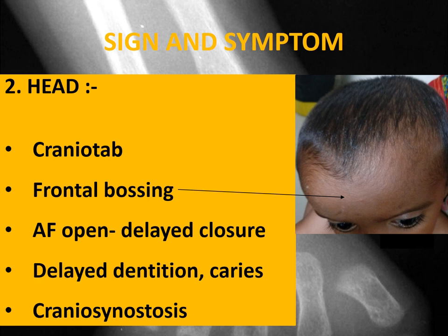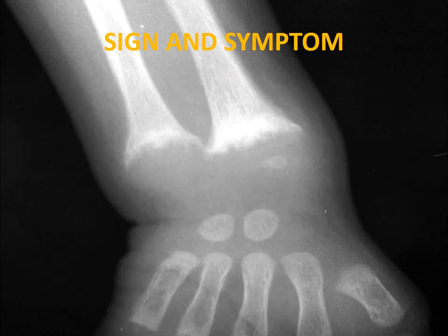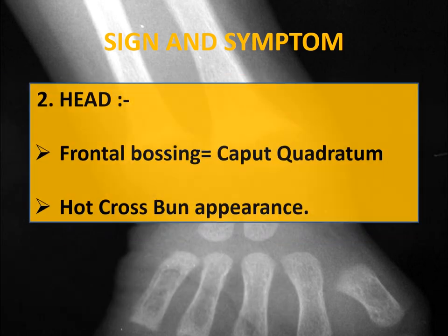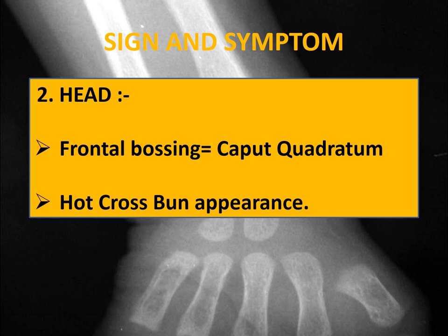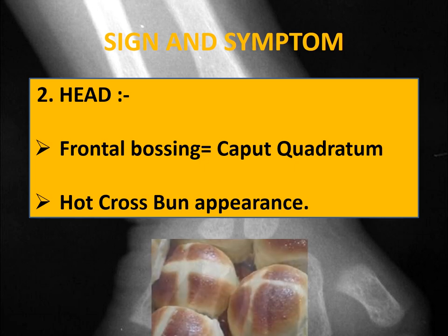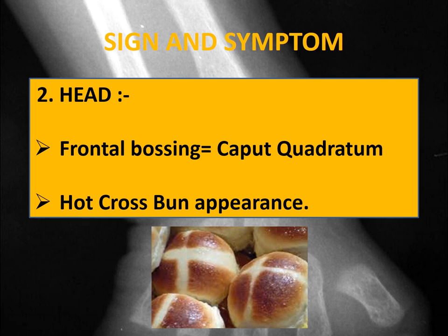Rarely, craniosynostosis can be a feature of rickets. Due to frontal prominence and flat occiput, the shape of the skull is like a square shape — we label this as caput quadratum. And due to prominence of the skull suture lines, the skull has a hot cross bun appearance.